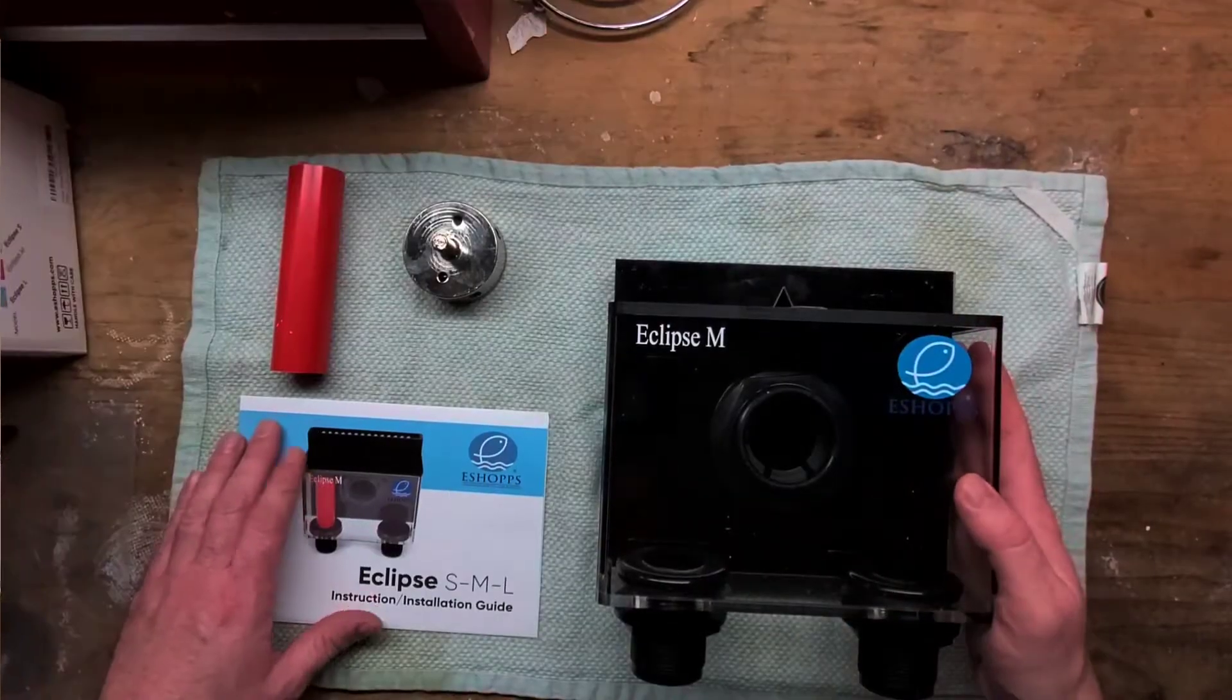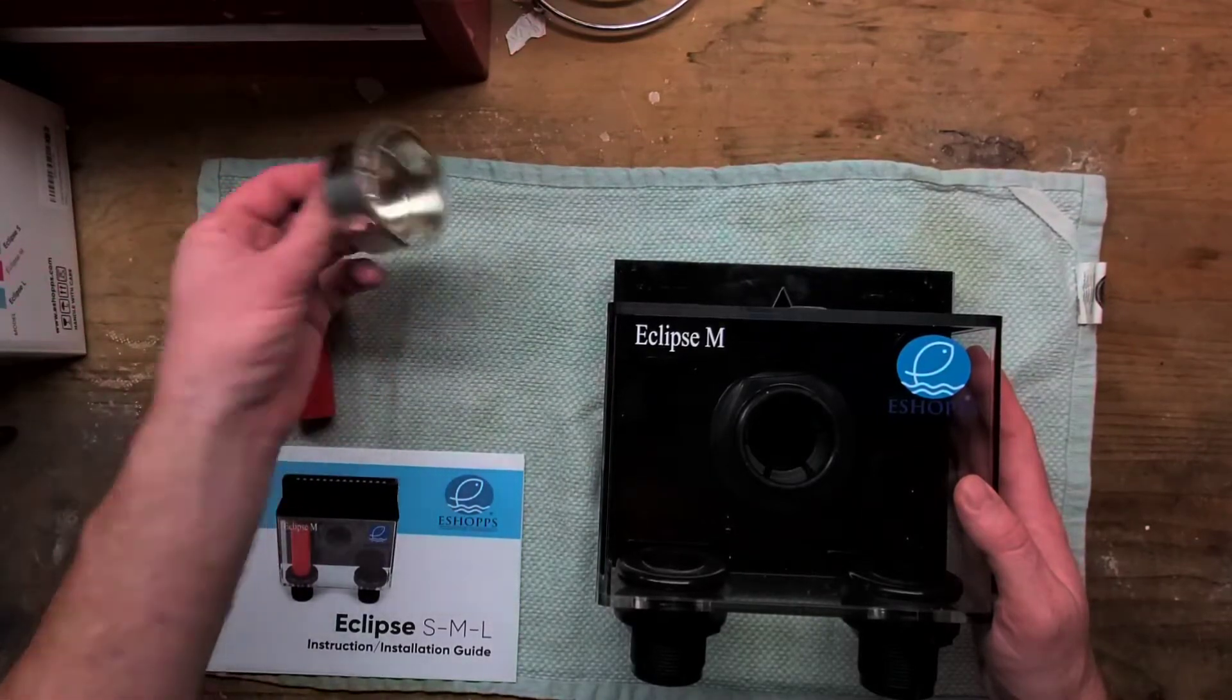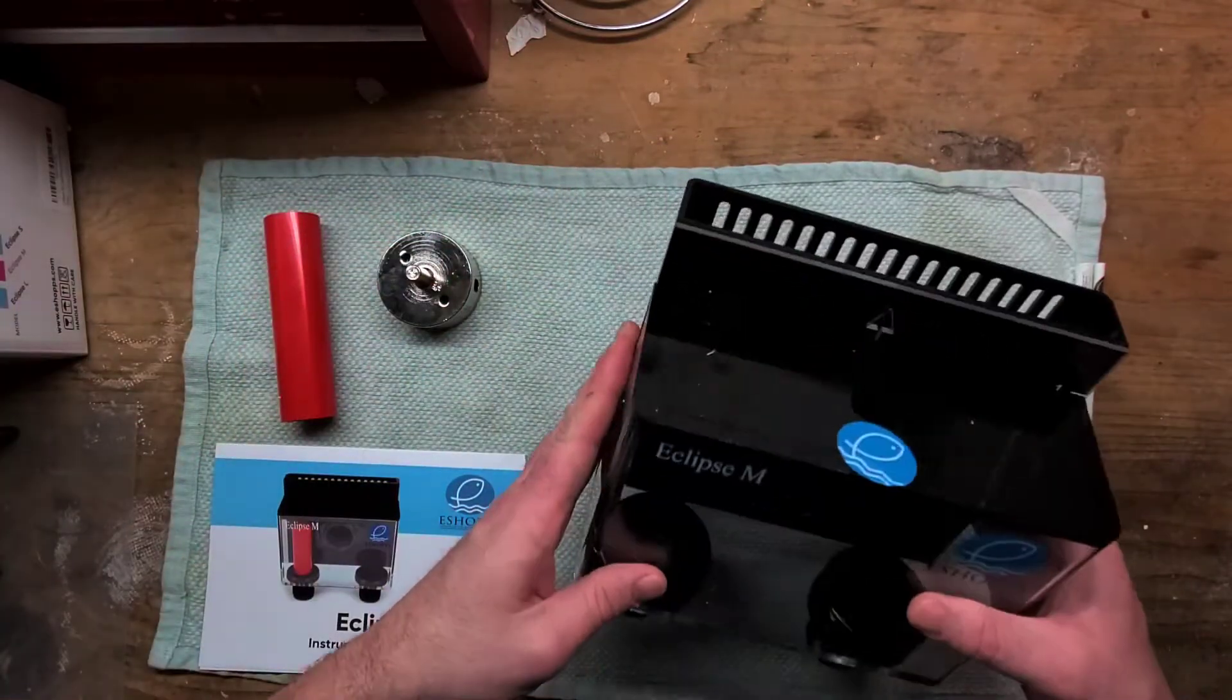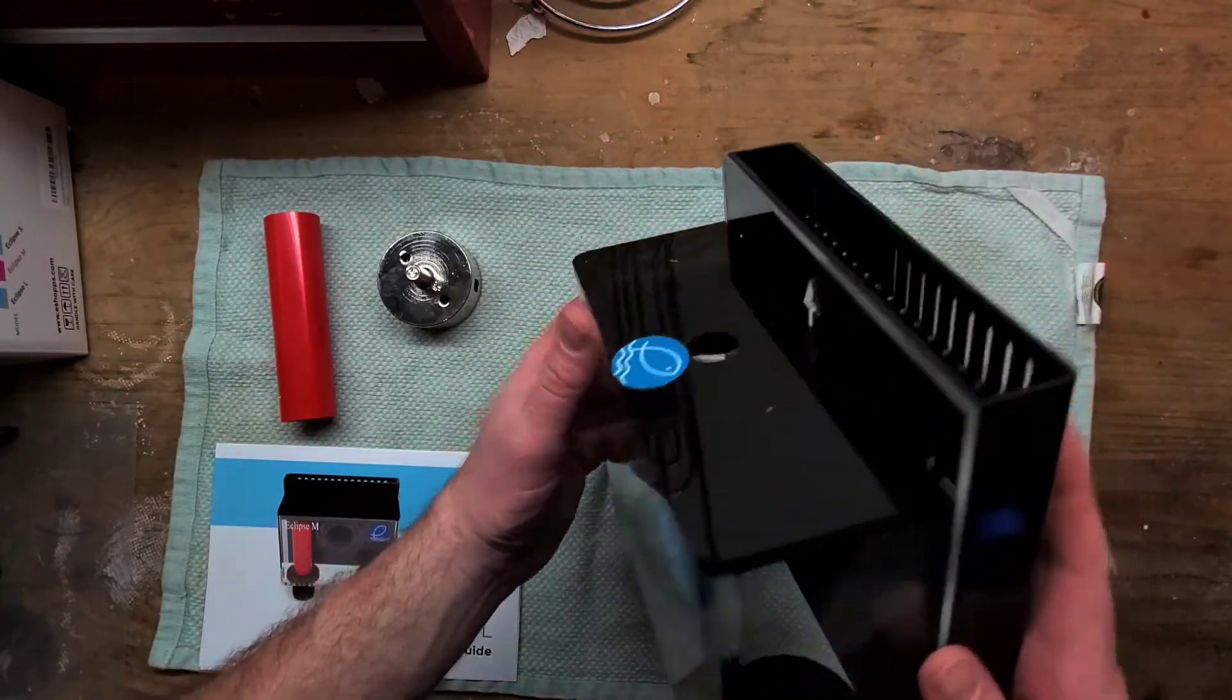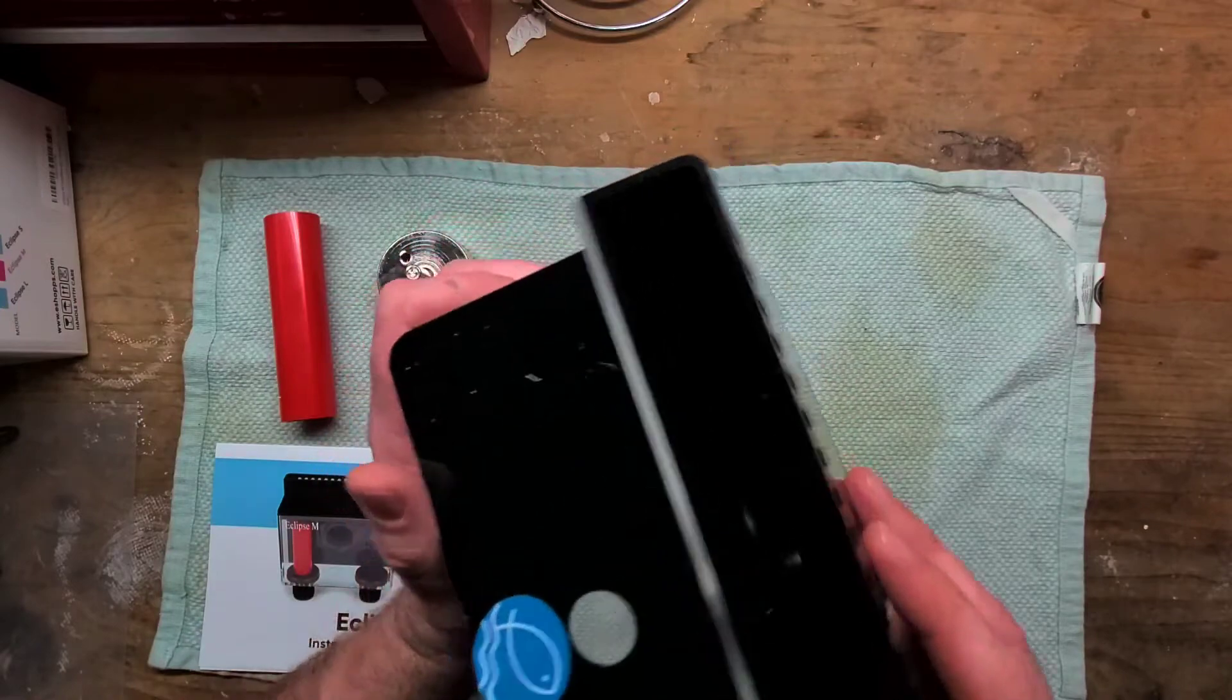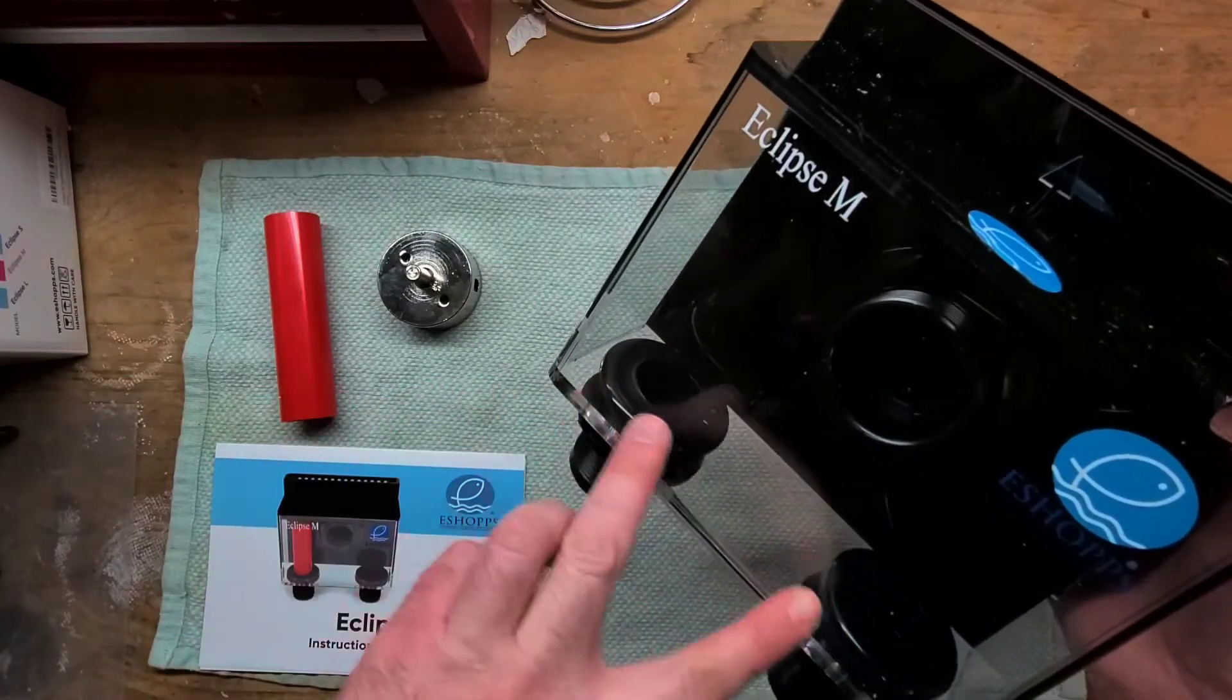Out of the box it comes with an instruction manual, drain line, and diamond drill bit - 60 millimeter. The overflow comes in two pieces. This is the weir where the water inside the tank raises up and overflows. It comes into the overflow box and then down the two drain lines.